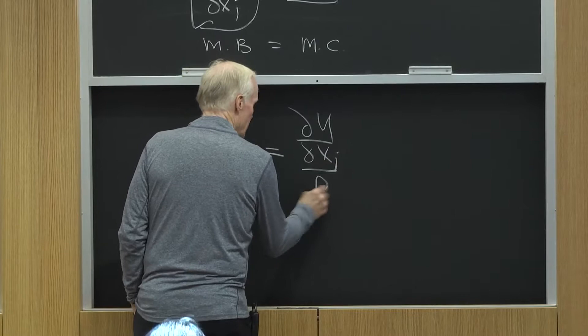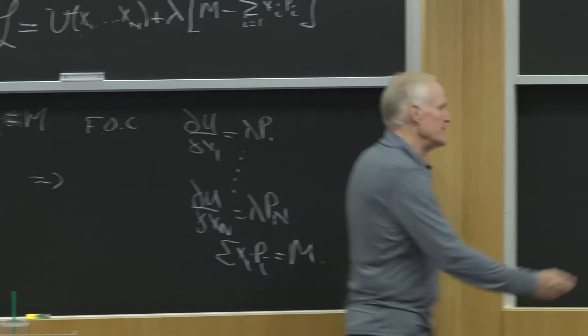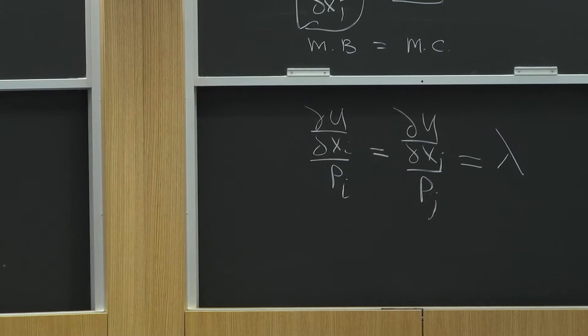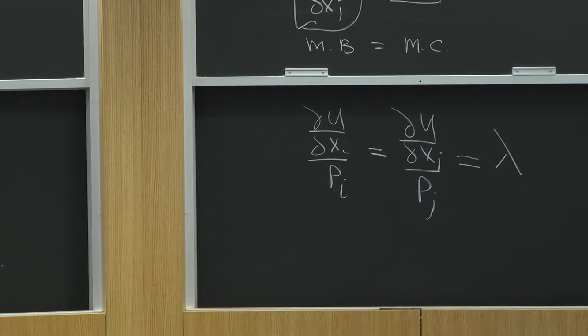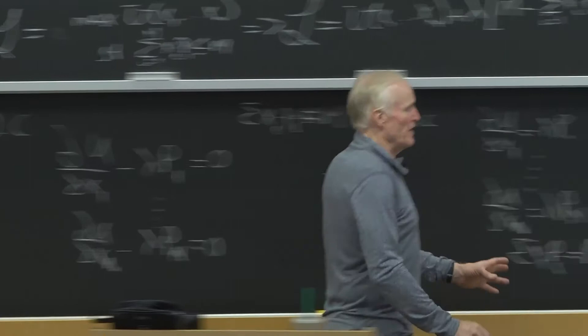And of course in my notation that's all equal to lambda. Because both of those have got to be equal to lambda. What does that say? What does this equation say? What is this?